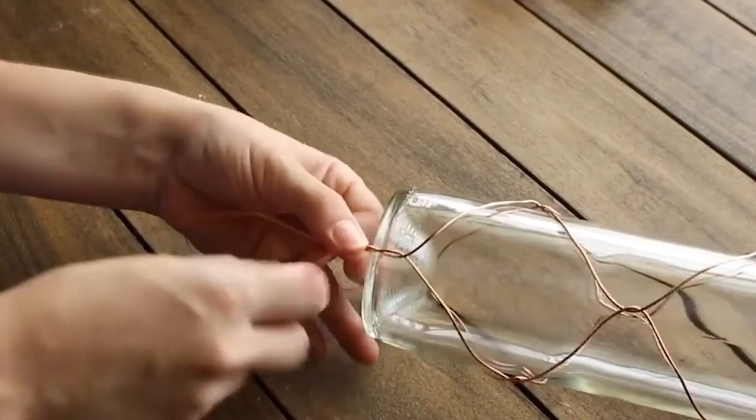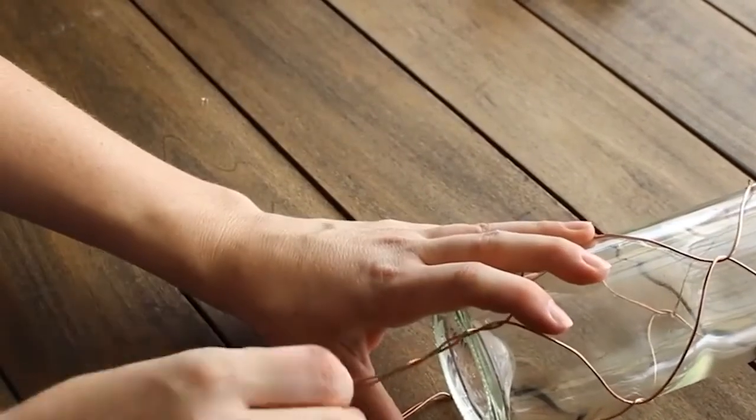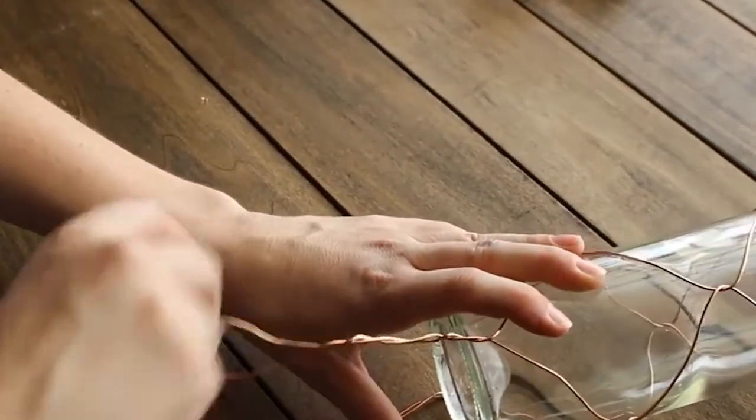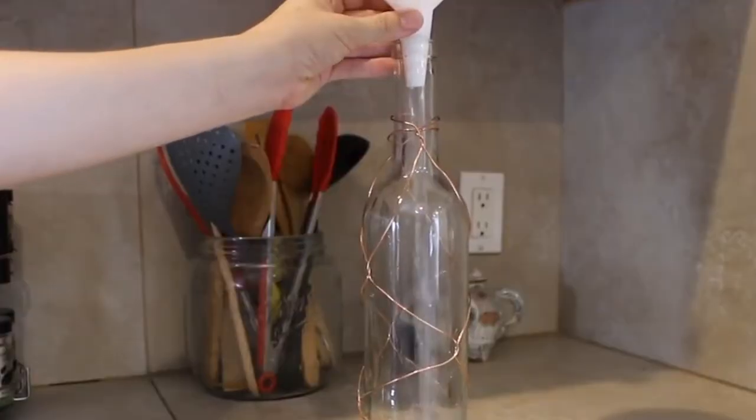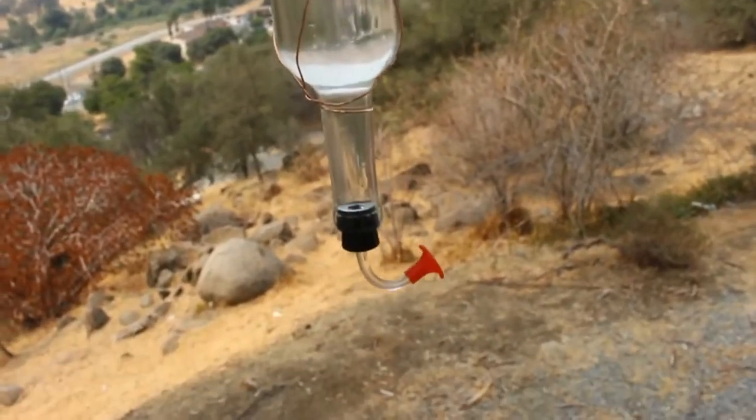Once you get to the end of your bottle, you will wrap two of the strands together and make a loop at the top for hanging. The only other thing you have to do is fill it with your hummingbird nectar and then put it outside and watch your hummingbirds enjoy it.